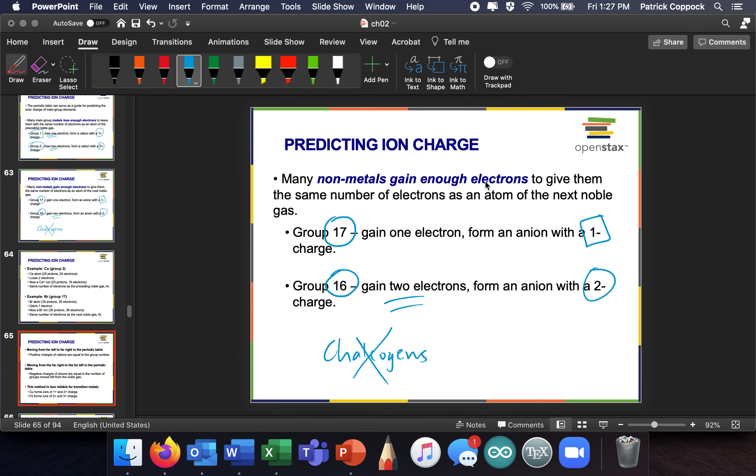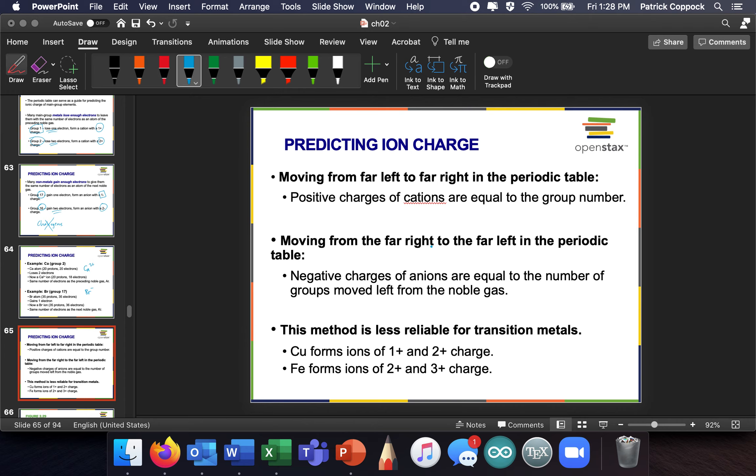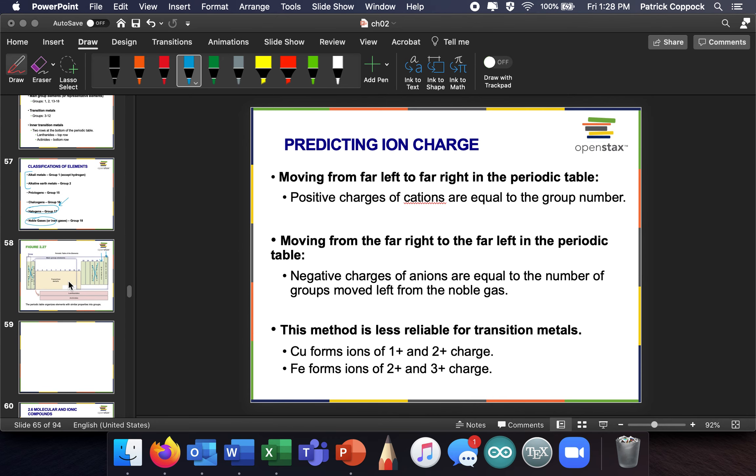So predicting ionic charge. For example, calcium in group two is going to end up with a two plus charge. Bromine in group 17, sometimes we say seven because there's a couple ways we number these things, is going to typically take on a minus one. And can you see where I'm going with this? Now that we know, let me scroll up the periodic table. I really shouldn't have one of these in here.